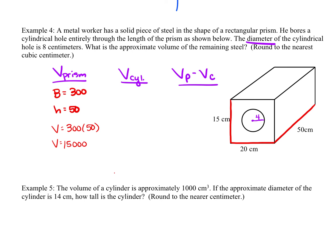For the cylinder, the area of the base — since radius is 4 — is 16π. The height of the cylinder is the same as the height of the prism because the hole goes all the way through, so the height is also 50. The volume of the cylinder is 16π times 50, which gives 800π.